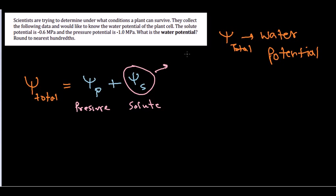It is simply calculated as the formula minus iCRT. We do not need this formula here because the actual solute potential is directly given—that is -1.0 MPa. So what we need to do here is simply put the values in.